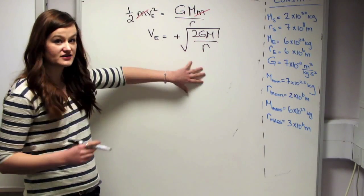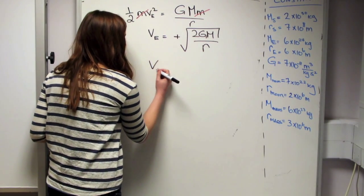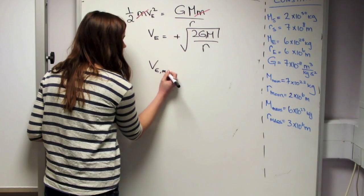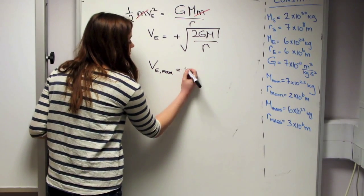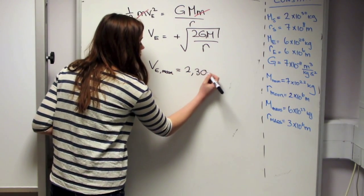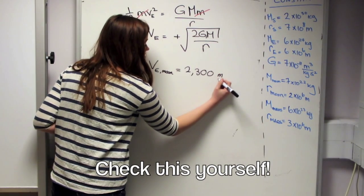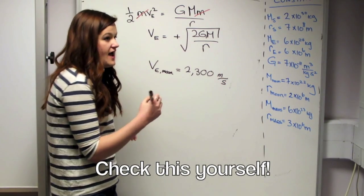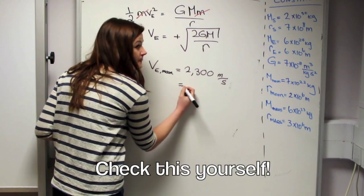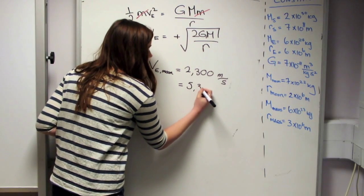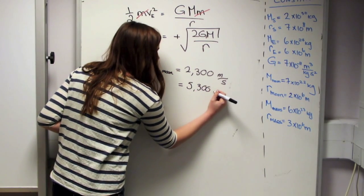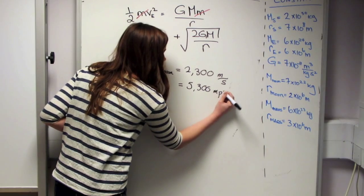So if we put those in, we could work out that the escape velocity of the Moon is about 2,300 meters per second. And that is about 5,300 miles per hour.